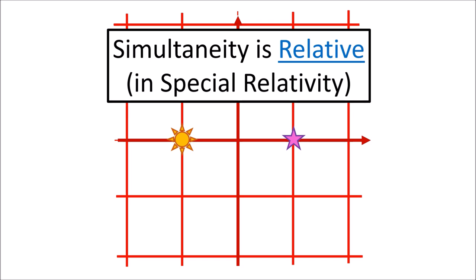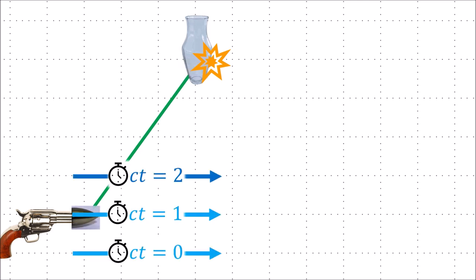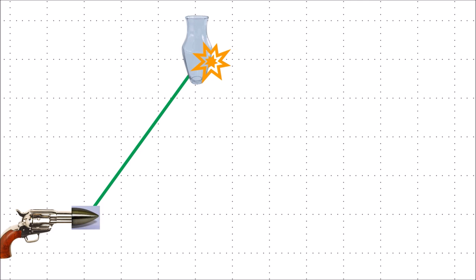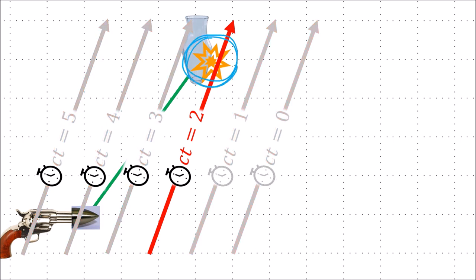After learning about the relativity of simultaneity, you may have some concerns. For example, if at one event in spacetime we fire a bullet from a gun, and then a bit later the bullet hits a vase and shatters it — in this frame the bullet is fired first and then the vase shatters after. But since the order of events is relative, you might wonder if we could find another reference frame where the vase shatters first and the bullet is fired after, which would break the causal relationship between these events.